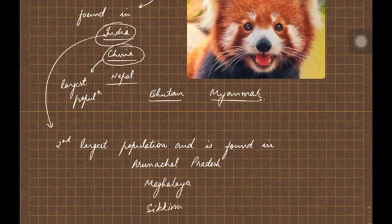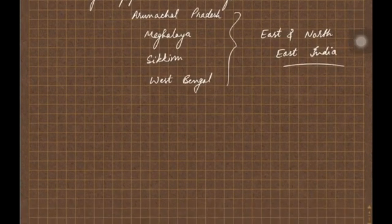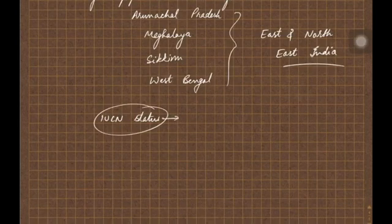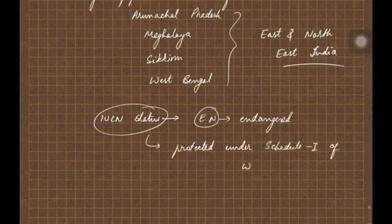In India, it is found in the states of Arunachal Pradesh, Meghalaya, Sikkim, and West Bengal, that is, it is located in East India and Northeast India. If you talk about the IUCN status of Red Panda, the status is that of endangered.